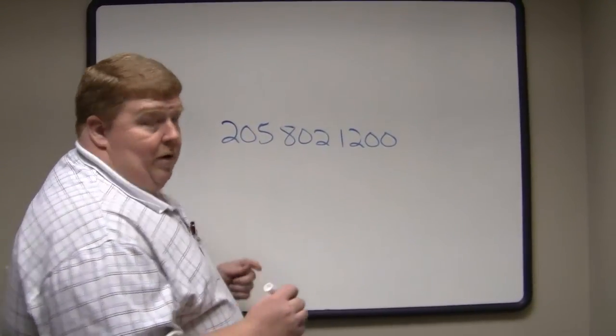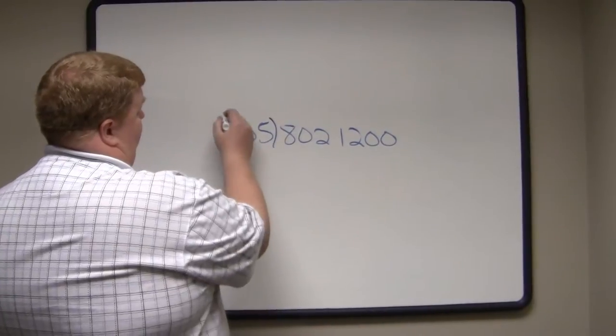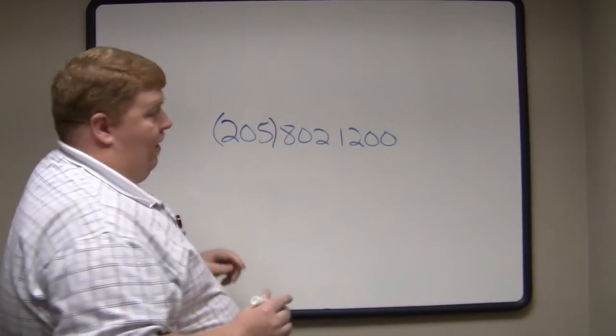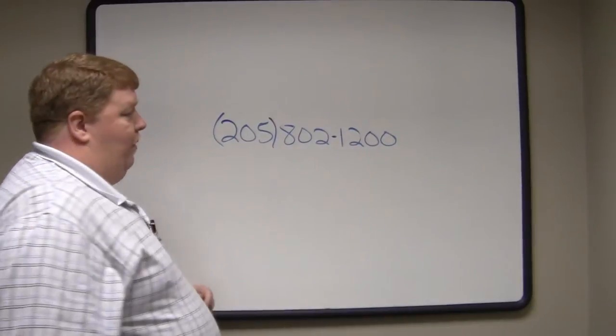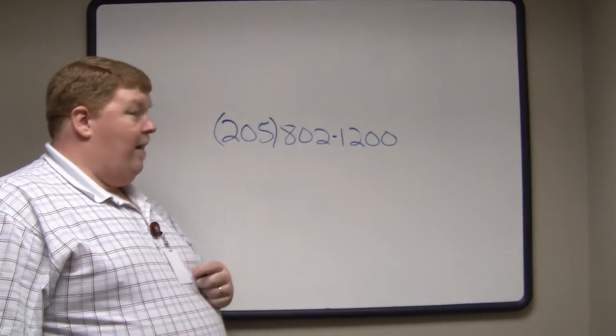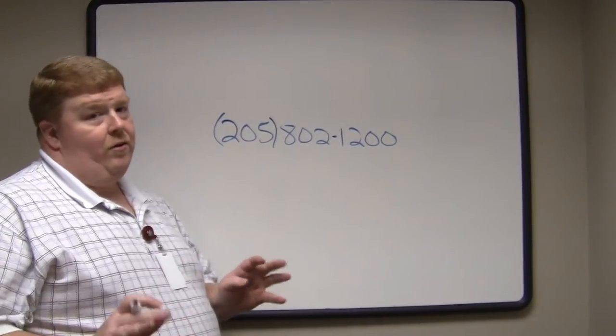Most of the time you see a phone number that is written something like this - you put parentheses around the area code and you probably put a dash in between the phone number, and now it looks very much like a phone number like you're used to seeing.